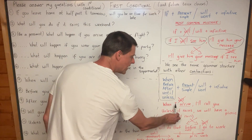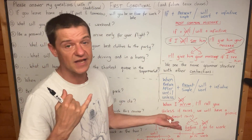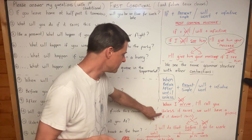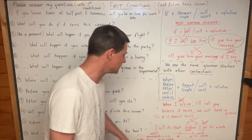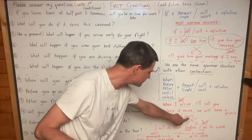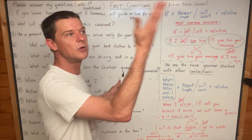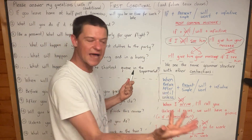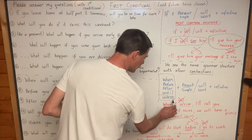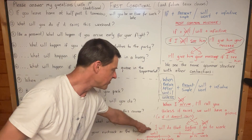You need to speak like this: 'When I arrive' — not 'will arrive' — 'when I arrive, I will call you.' When I get to the station, I will call you. When I get to my destination, I will call you. Unless it rains — which means if it doesn't rain — 'unless' is negative if. If it doesn't rain means unless it rains, we will have a picnic. So unless it rains, we will have a picnic. Unless is negative if.